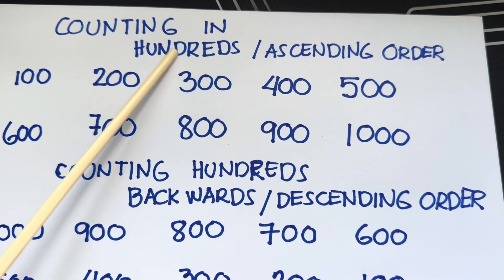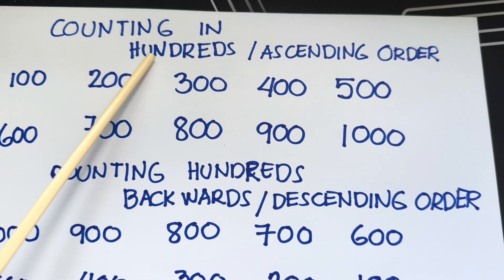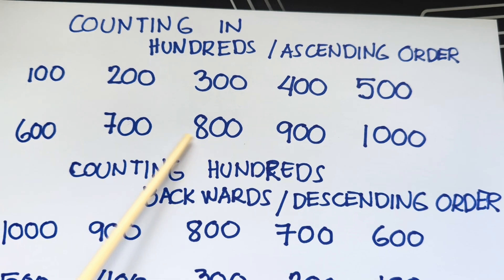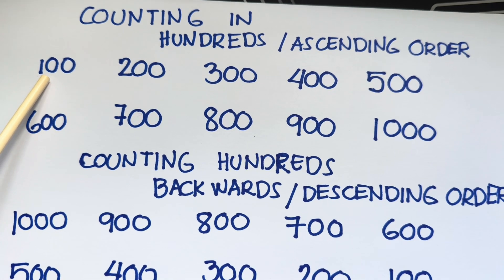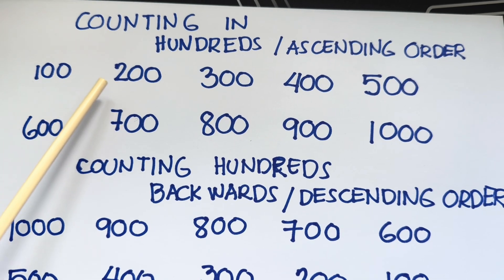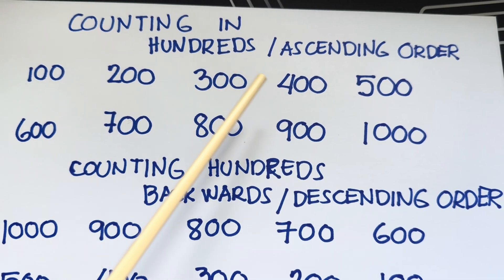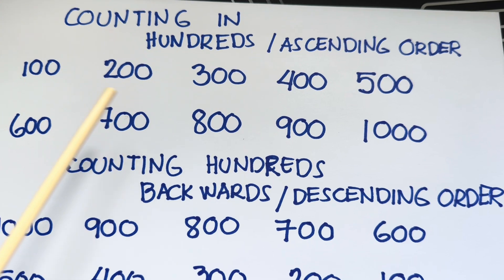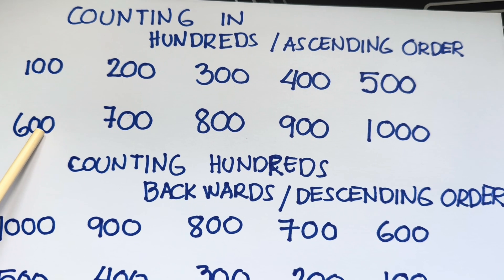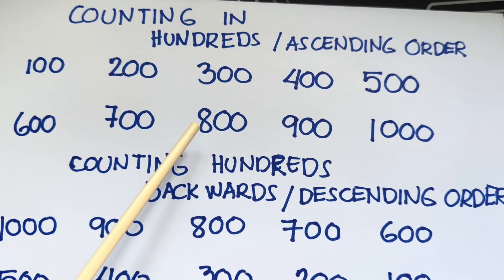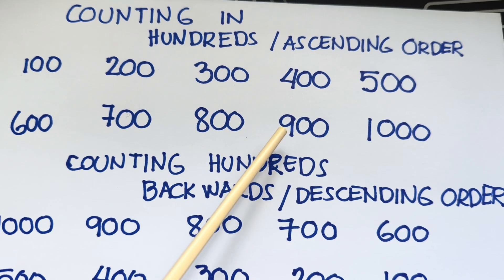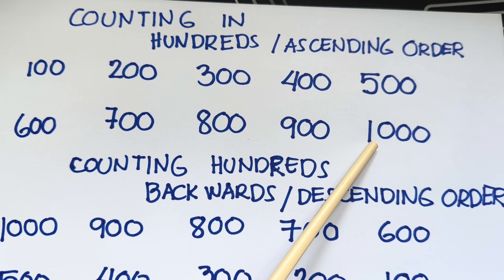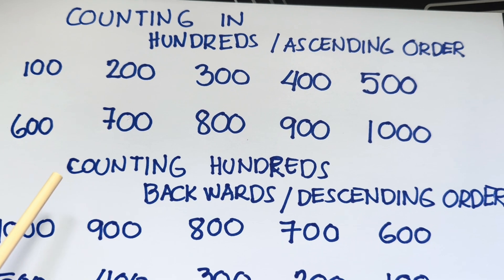Counting in hundreds or in ascending order. 100, 200, 300, 400, 500, 600, 700, 800, 900, 1000.